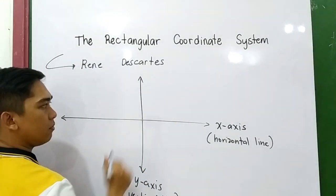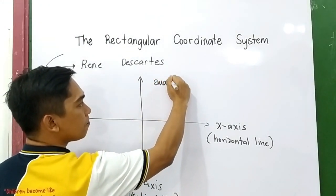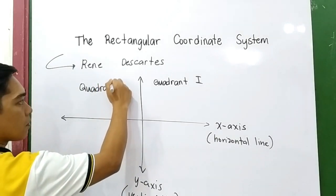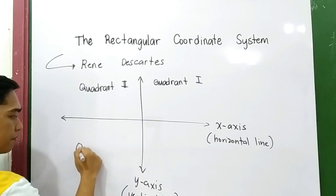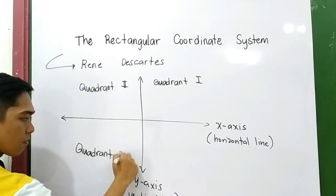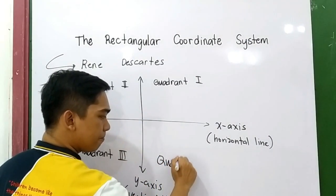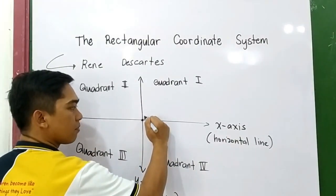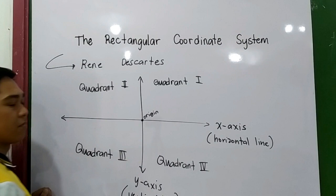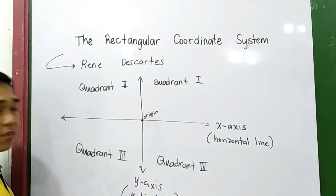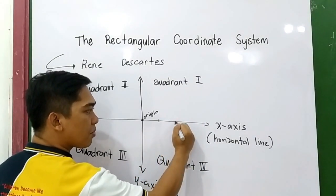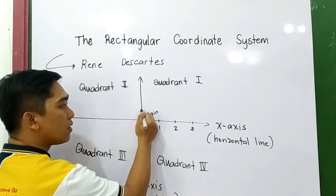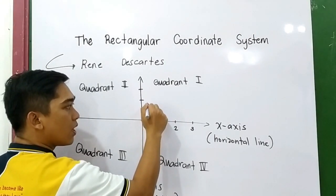This is divided into four: the first quadrant, quadrant one; quadrant two; quadrant three; and quadrant four. The intersection point is what we call the origin, and the coordinates of the origin are zero, zero. From the right side of the origin, we have the positive numbers: one, two, three. On the upper part of the origin are also the positive numbers: one, two, three.